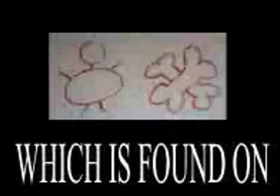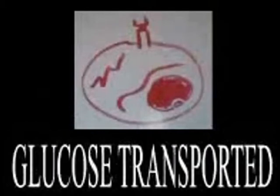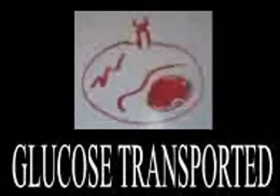Next is the GLUT4 transporter, which is found on adipose tissue and skeletal tissue. It is responsible for glucose transportation in and out of the cells.